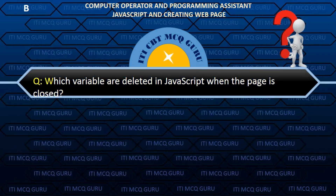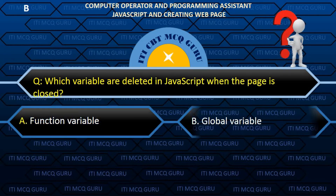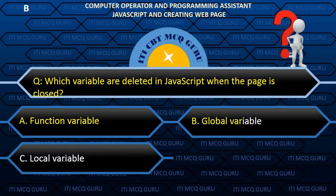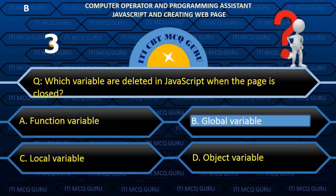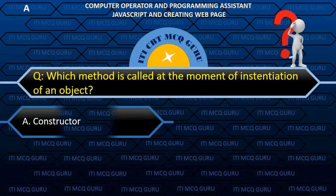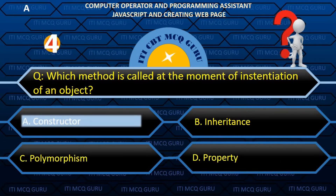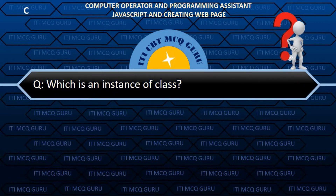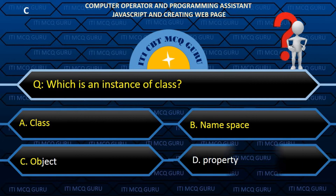Which variables are deleted in JavaScript when the page is closed? The global variable. Which method is called at the moment of instantiation of an object? A. Constructor. Which is an instance of a class? C. Object.